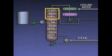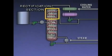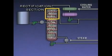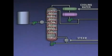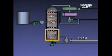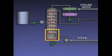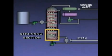The section above the flash zone is called the rectification section. In this part of the tower, the concentration of lighter components increases. The section of the tower below the flash zone is called the stripping section. In this section, the lighter components are vaporized or stripped from the heavier liquid.